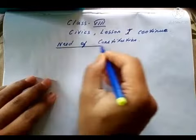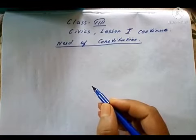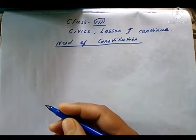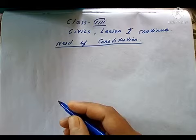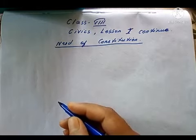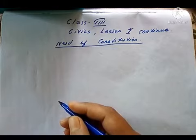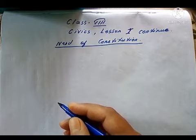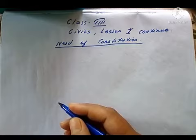First of all, we need to understand what is a constitution. Today many countries — almost most of the countries in the world — have their constitution, whether written or unwritten. India is a democratic country and it has a constitution. We can say that India has the longest written constitution in the world, and it is recorded in the Guinness World Record.